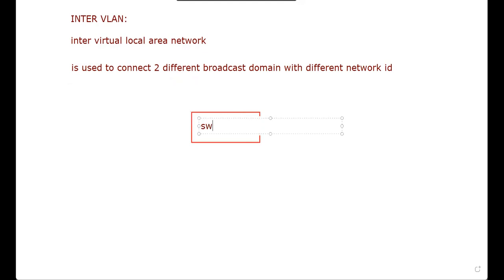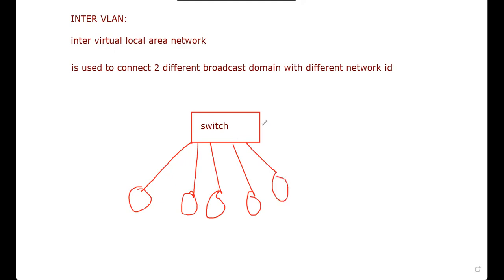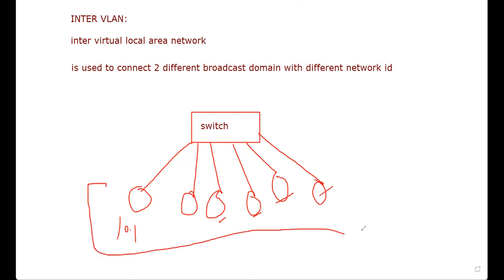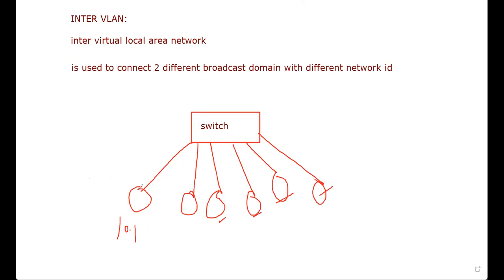In the previous topic, I used a switch connected with PC number one, two, three, four, five, and six. The IP addresses were 10.0.0.1, 10.0.0.2, 10.0.0.3, 4, 5, and 6. They were all connected with the same network ID and the same broadcast ID.